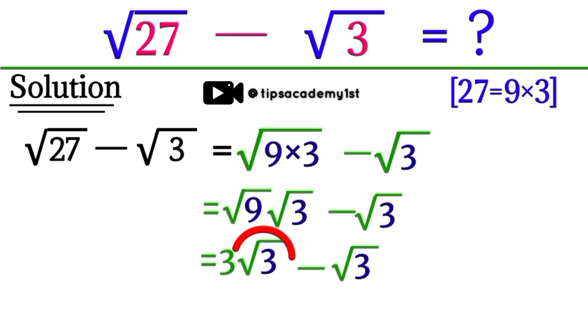We can take common square root of 3 from this term and square root of 3 from this term. When we take square root of 3 common, the remaining term will be 1. So we get 3 minus 1 times square root of 3.